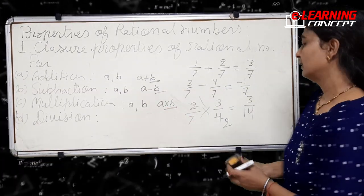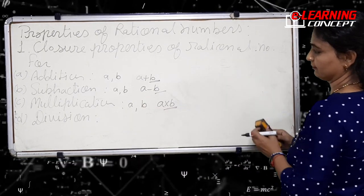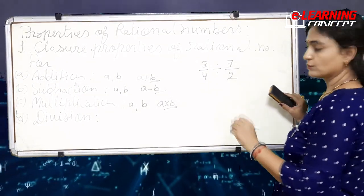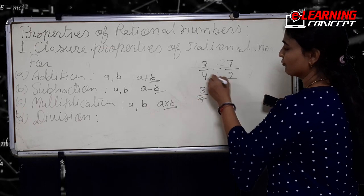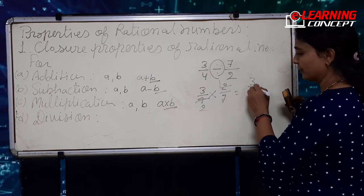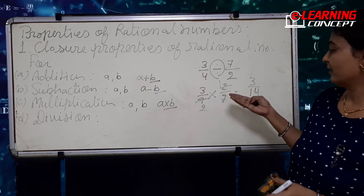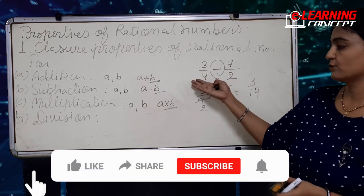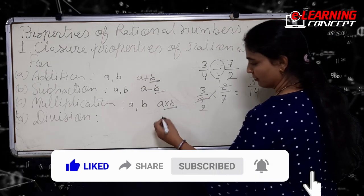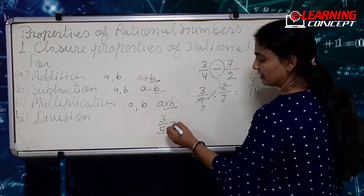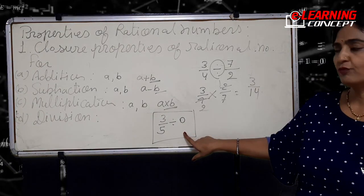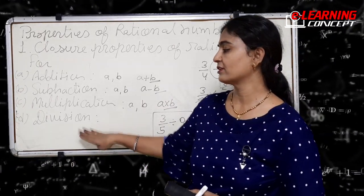Let's take three by four divided by seven by two. We convert the division into multiplication and we get three by four, which is a rational number. So if A and B are rational numbers, the division of two rational numbers is also a rational number. But there is a complication: if we take three by five divided by zero, this term is not defined in mathematics. So the conclusion is that rational numbers are not closed under division.